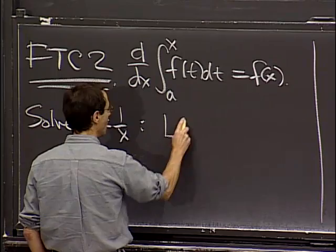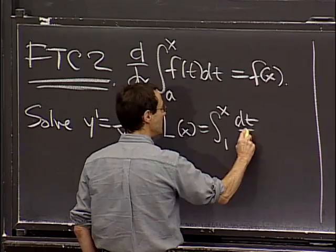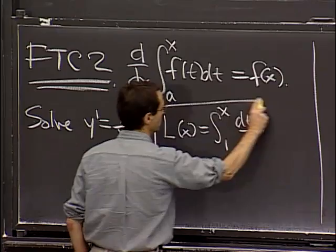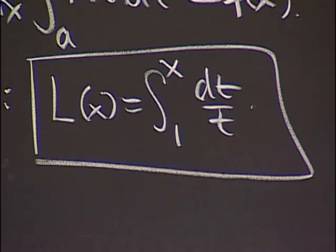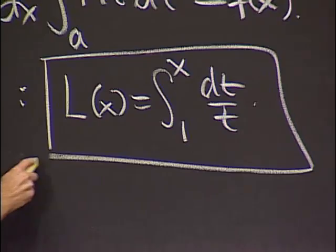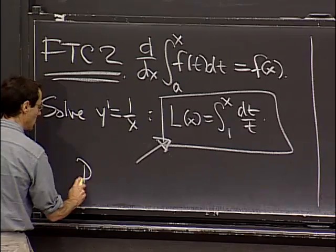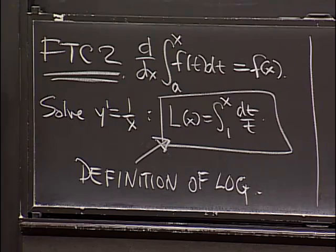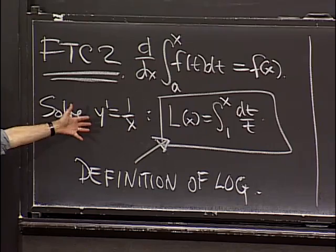In particular, we can solve the equation y' equals 1 over x with this formula, namely using an integral. L is the integral from 1 to x of dt over t, where the function f is just 1 over t. That formula can be taken to be the starting place for the derivation of all the properties of the logarithm function. We're going to take this to be the definition of the logarithm, and we can read off the properties of the logarithm just about as easily as we could before.